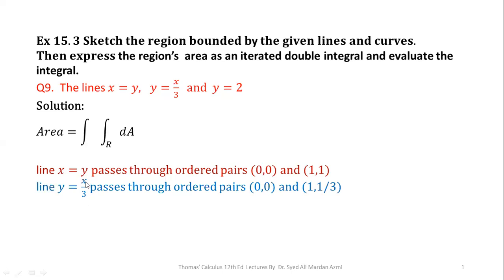These ordered pairs for y = x/3 are calculated by substituting different values of x and finding the corresponding values of y. For example, if x = 0, then y = 0; if x = 1, then y = 1/3; if x = 6, then y = 2. The third line, y = 2, is a horizontal line which passes through the point (0, 2) along the y-axis.